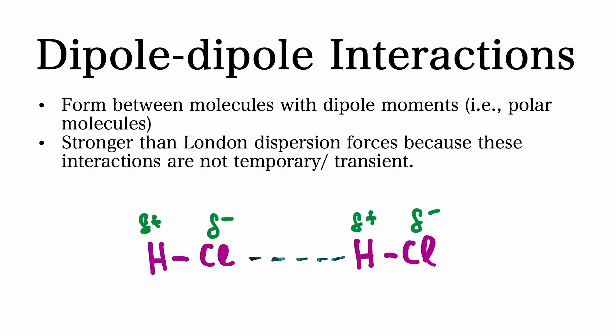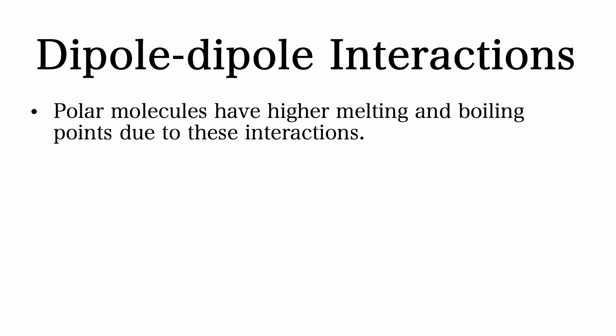Here, the hydrogen already has a partial positive charge, and the chlorine has a partial negative charge. As the dipole-dipole interaction forms between the chlorine of one molecule and the hydrogen of the other. Polar molecules tend to have higher melting and boiling points due to these interactions.